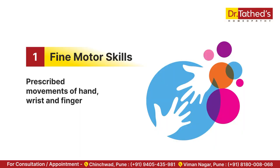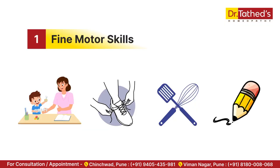First is fine motor skills. Many autistic children struggle with fine motor skills, which require precise movement of the hand, wrist, and fingers. Some activities that can hamper their day-to-day routine include using scissors, tying shoelaces, using utensils, drawing, or writing.